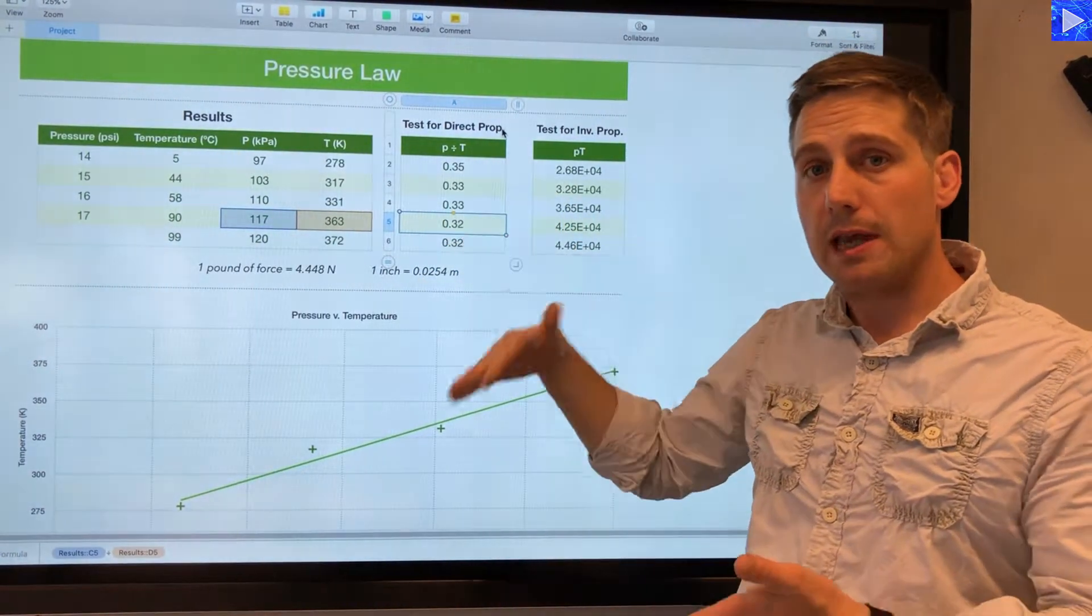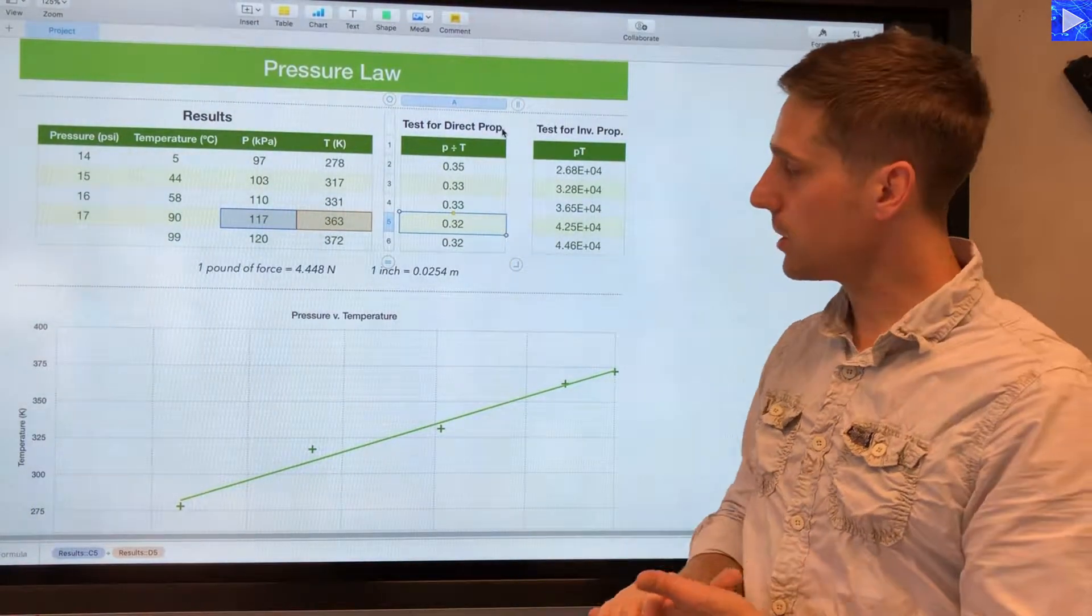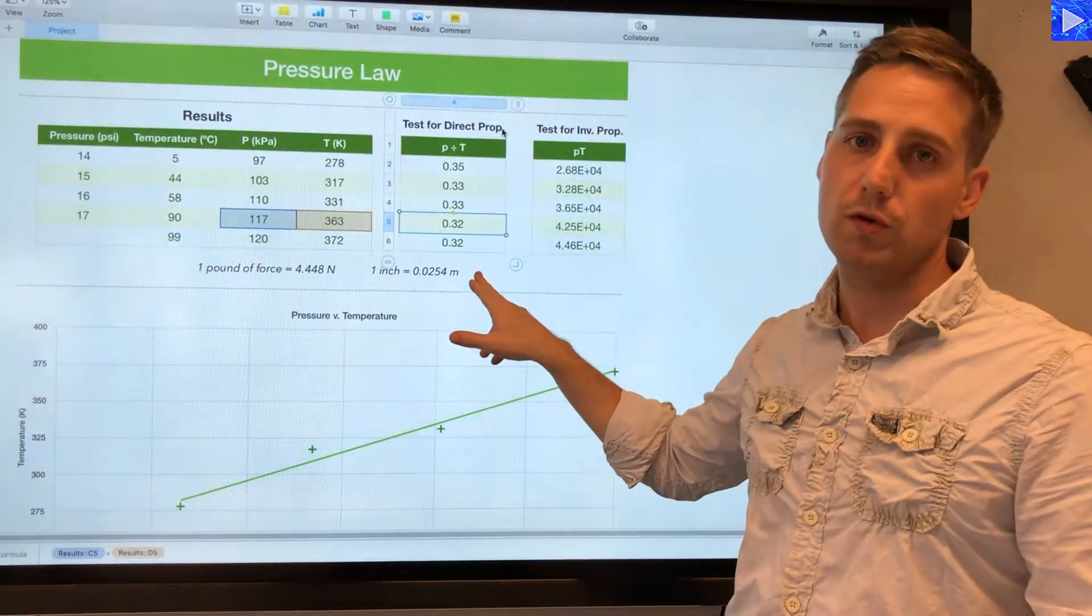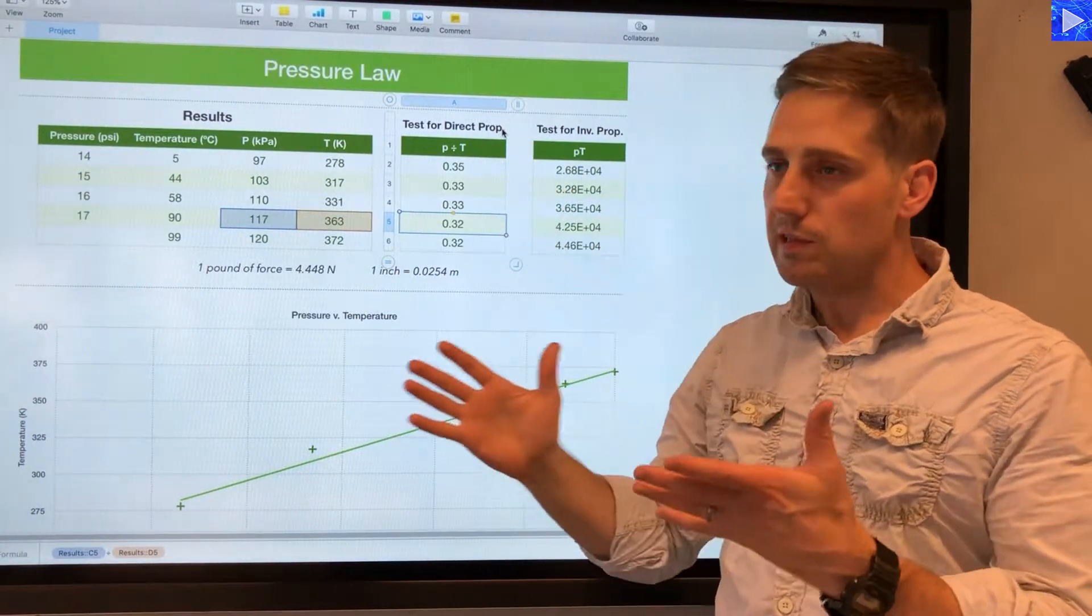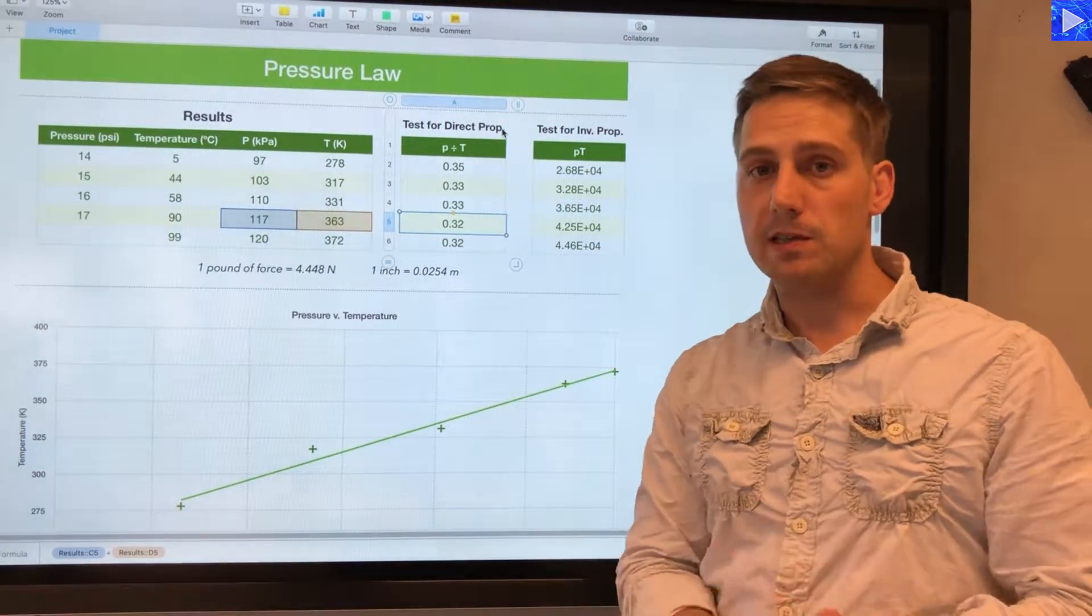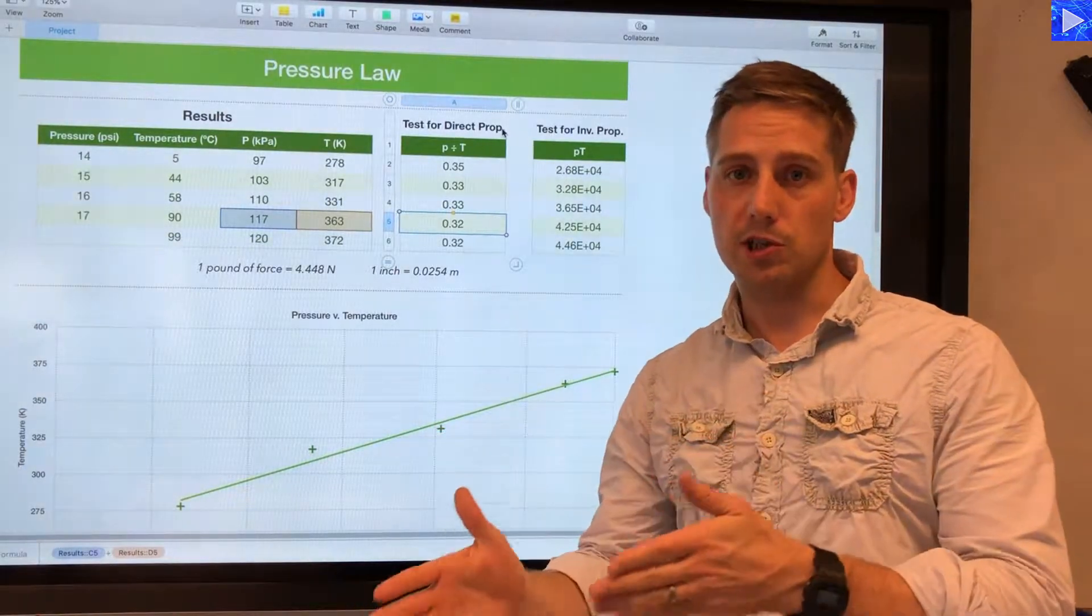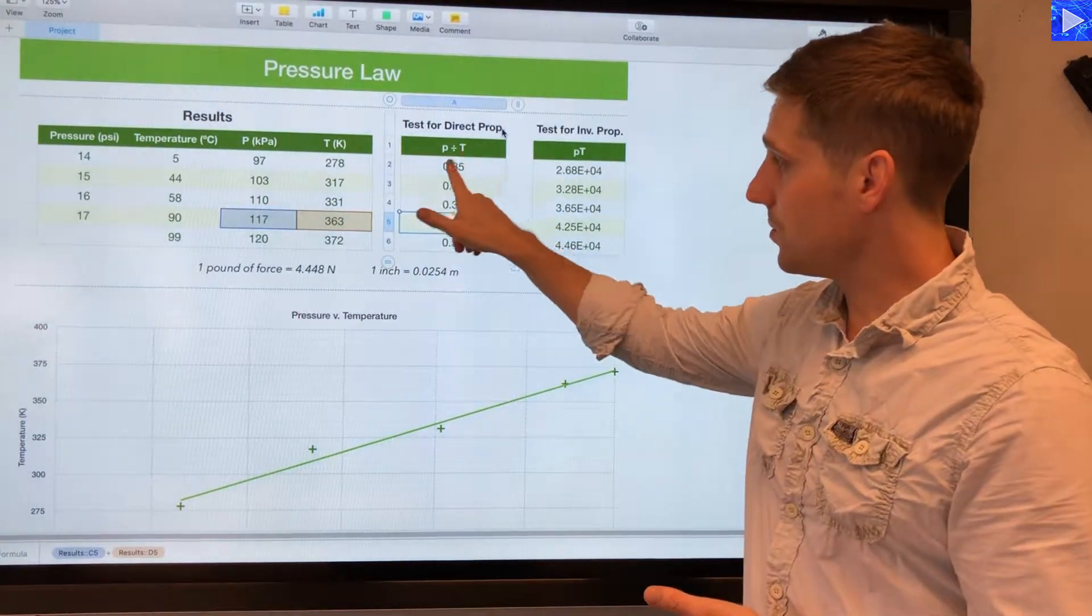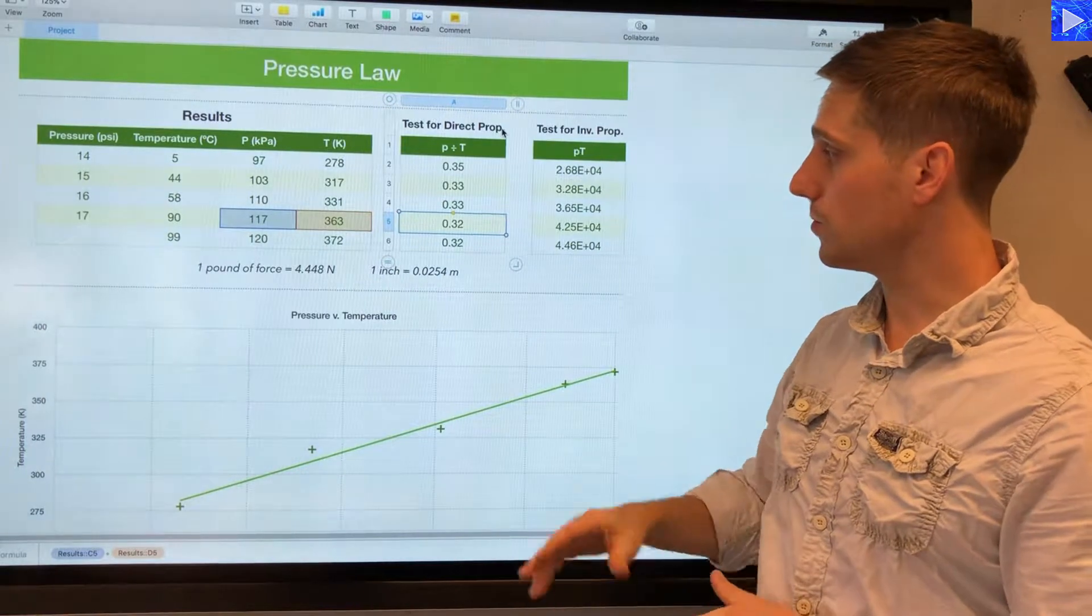Though we don't know if we carried out more values, if we're able to go to higher temperatures and higher pressures, then perhaps we would have found some 0.34s or 0.33s here. That would then show that this is staying roughly constant. We should be expecting to find that they are remaining constant because we know that pressure and temperature are directly proportional. So anyway, it's not a very conclusive test, but probably they are directly proportional from this set of data.